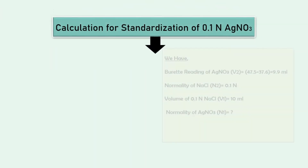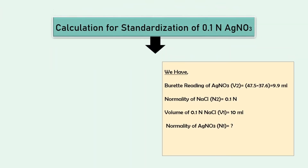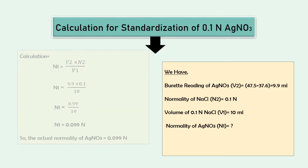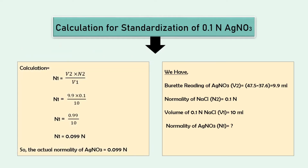It's time to calculate the actual normality of silver nitrate. Calculation of normality is pretty simple. We can get the volume of silver nitrate V2 by subtracting the final burette reading from the initial reading, which is 9.9 milliliters. Normality of sodium chloride N2 is 0.1 normal. Volume of 0.1 normal sodium chloride V1 is 10 milliliters. We have to find the actual normality of silver nitrate N1. By solving the equation, the actual normality of silver nitrate solution is 0.099 normal.